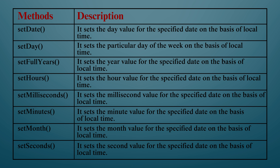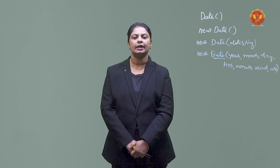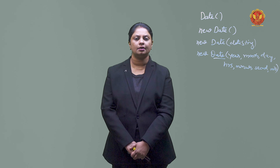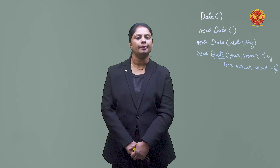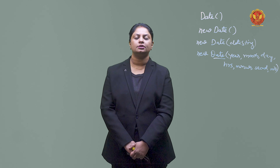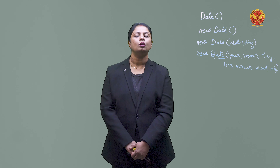setMonth will set the month value for the specified date. setSeconds will set the second value for the specified date, based on local time.